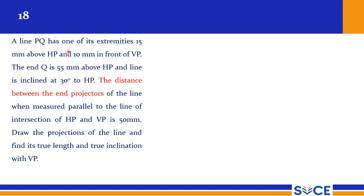This is the problem statement: a line PQ has one of its extremities 15 mm above HP and 10 mm in front of VP. Q is 55 mm above HP and the line is inclined at 30 degrees to HP. The distance between the end projectors of the line, when measured parallel to the line of intersection of HP and VP, is 50 mm.